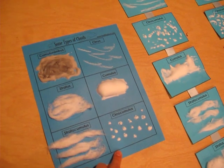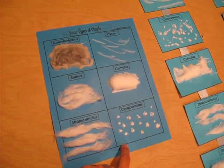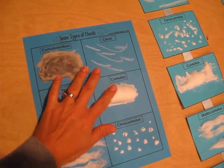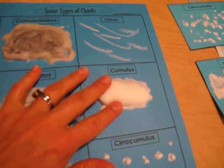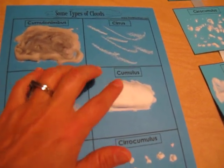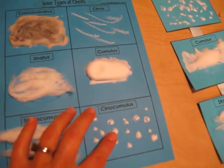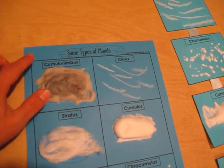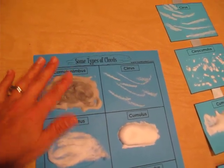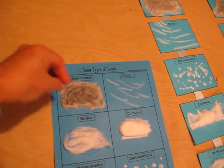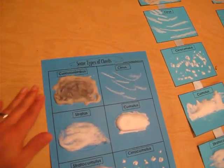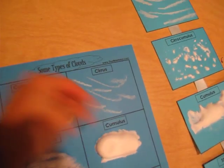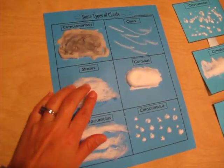For the cumulonimbus, cumulus, and cirrocumulus clouds, I mixed equal parts shaving cream and glue. It's really fun — it dries really puffy. For the cumulus and cirrocumulus, just use the plain shaving cream and glue mixture. For the cumulonimbus, I added a little black paint to make it gray, to represent that it's a thunderstorm cloud. For the cirrus clouds, we just made little lines with chalk.